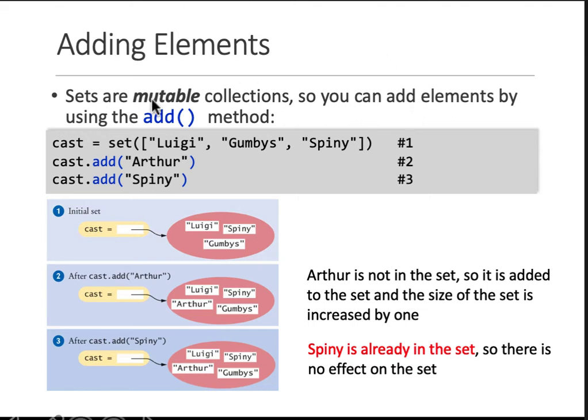And then sets are also mutable, meaning that you can increase or decrease their size with the command to add. The command is add to remove its discard. So for instance, if you create a set from a list like this, then you can add members to that set by just the add command and give the appropriate data type in there. So here we are adding Arthur and then spiny and you can see since spiny is already in the set, it is not added to the set. So since Arthur was not, it was added. And since it's a set, sets have that property that it's unique elements. So a second spiny will not be ordered in the set.